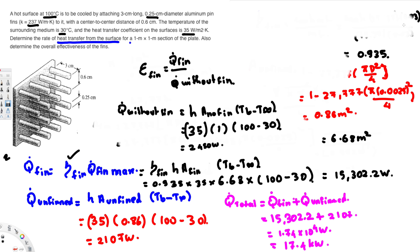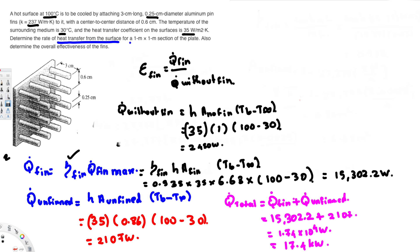Now plugging into the effectiveness equation: ε = q_total / q_without_fin = 17,400 / 2,450 = 7.10. So the overall fin effectiveness is 7.10. That's the answer to the second question.